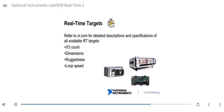So, what are your options? Well, since NI releases a new product on average about every business day, the list is going to be growing. I suggest you refer to NI.com for detailed descriptions and specifications of all the currently available real time targets. And some things you'll want to consider, of course, the I/O count, the dimensions, the ruggedness, typically temperature, vibration and shock ratings, and the loop speed that you need to attain on the system.